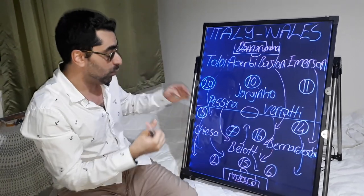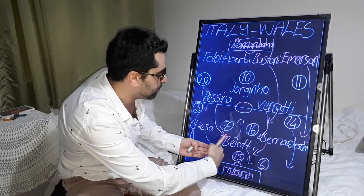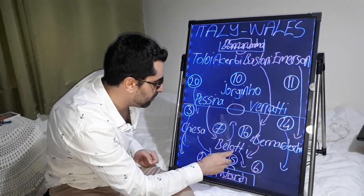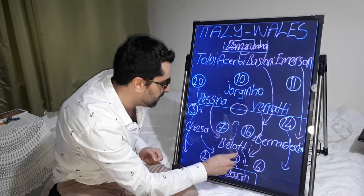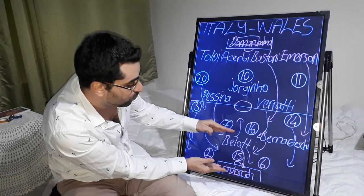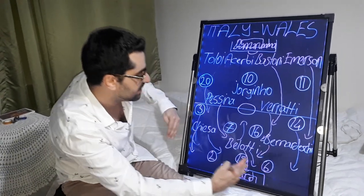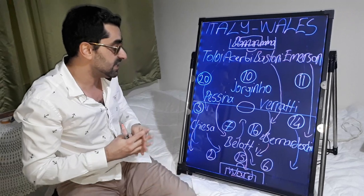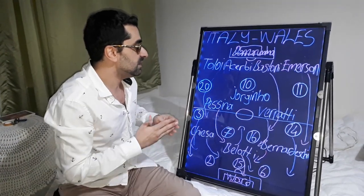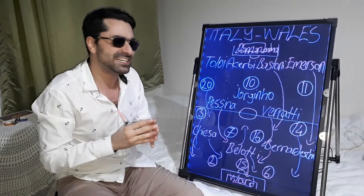Sometimes Wales' defenders split away to the right and left, and Bellotti moved higher to press the Welsh goalkeeper. He played close to the goalkeeper when the Welsh defenders split away. In the second half, it was a balanced game and Italy was very relaxed.